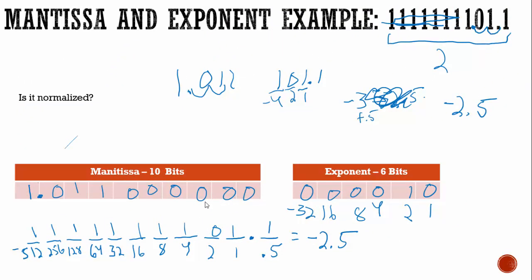Anytime you have extra bits left over, make sure you pad those with zeros so you're not changing the value. That's going to be it for this video. If you have any questions, please leave a comment below. We'll see you in the next one.